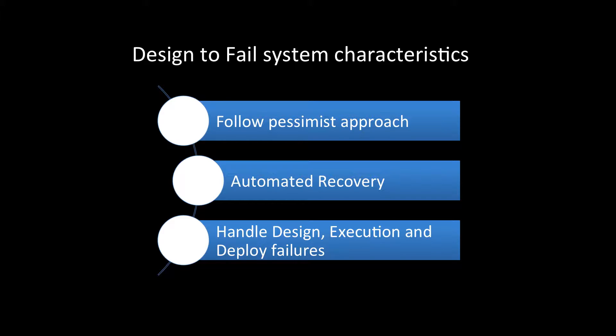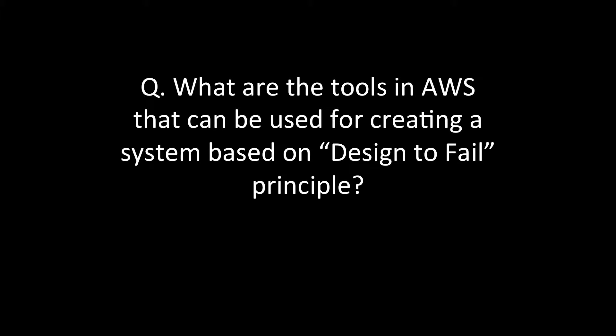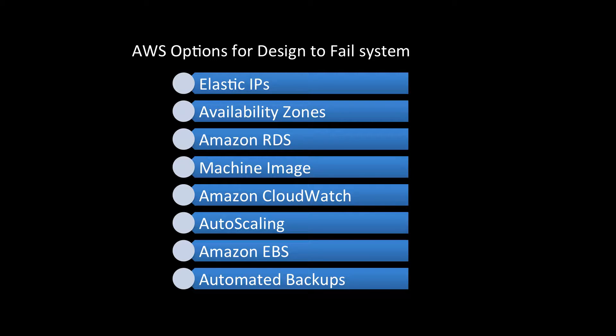An AWS system is designed to automatically recover from design, execution, and deploy stage failures. When all three stages of failure are handled, the system can handle any failure. AWS provides many tools and products for creating a strong system based on the design-to-fail principle.